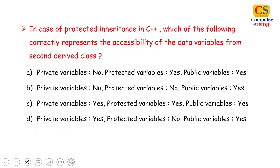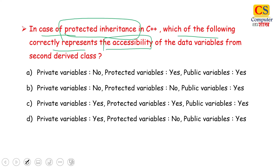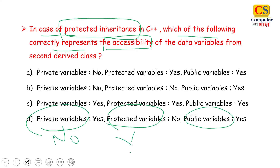Next question: Which of the following correctly represents the accessibility of data variables from a second derived class? We need to determine whether private, protected, and public variables are accessible when using protected inheritance. Private variables are not accessible. Protected and public variables follow the rules shown in the table. Checking the options, option A matches.